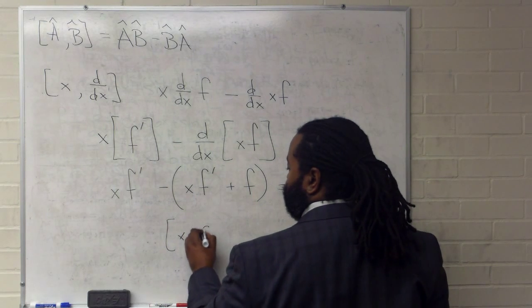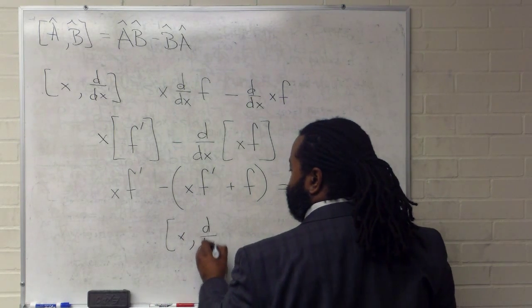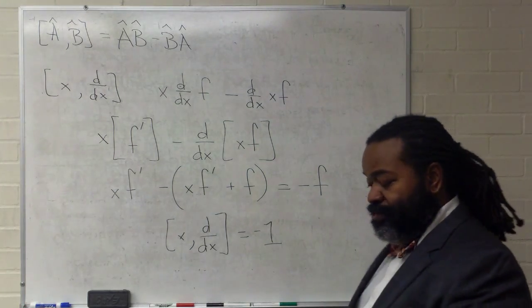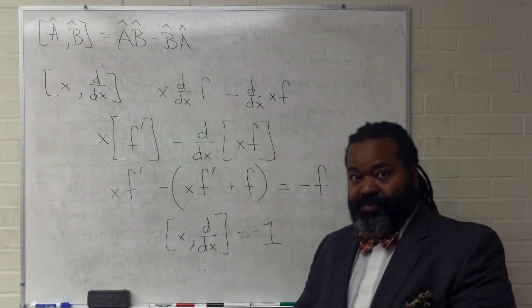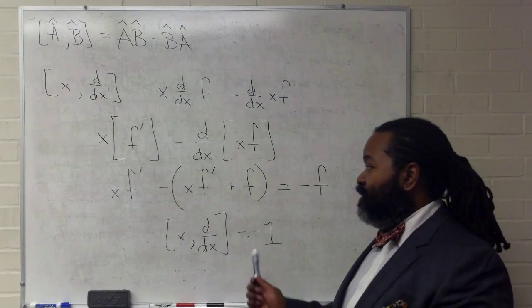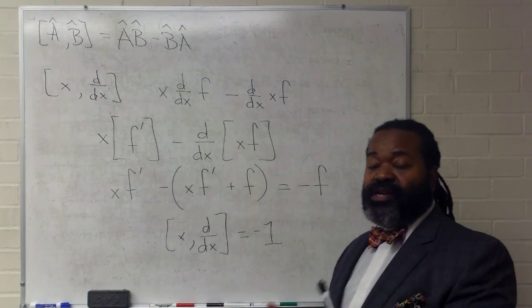That the commutator of X and its first derivative is equal to negative one. That means that these two quantities do not commute because this is a value other than zero. And this then shows us the value of that commutation relation.